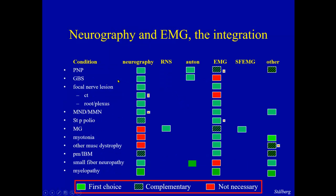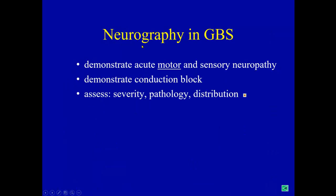Taking the example of Guillain-Barré, neurography is also the most important test here. We shall demonstrate motor and sensory involvement with a preponderance for motor involvement, which is not typical for many other neuropathies. We shall also demonstrate conduction block, which is very important — we do not see conduction block in diabetic neuropathy or alcohol neuropathy. And we try to assess the degree and severity of the pathological process.